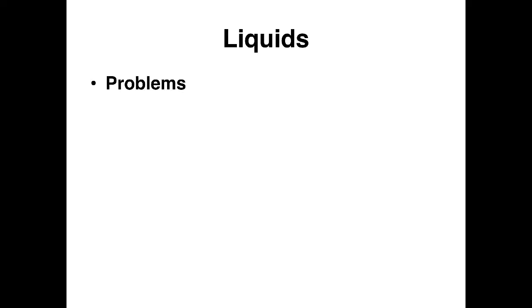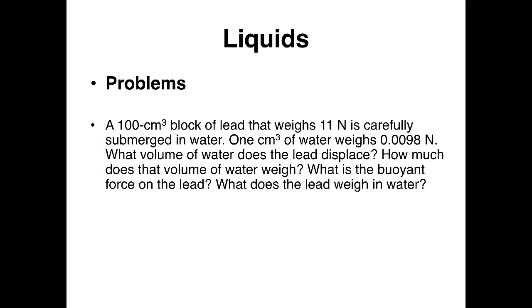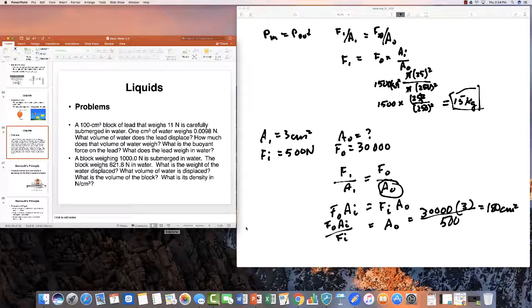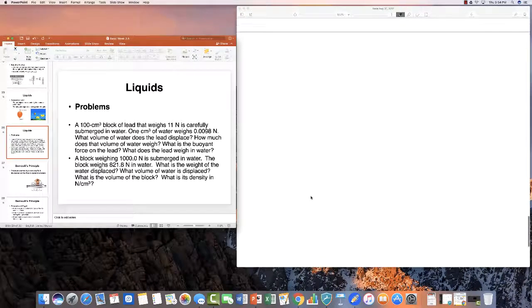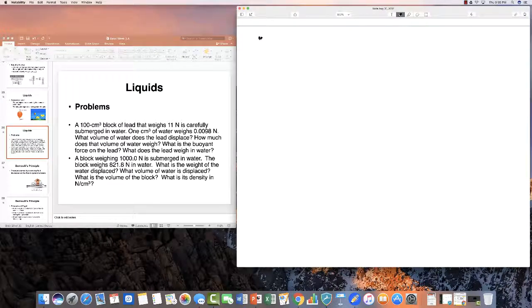Let's do a problem looking at this. A 100 cubic centimeter block of lead weighs 11 newtons and is carefully submerged in water, where one cubic centimeter of water weighs 0.0098 newtons. What volume of water will the lead displace? Assuming it sinks so its entire volume is submerged, the lead displaces 100 cubic centimeters of water.